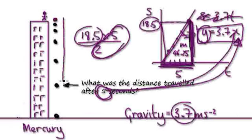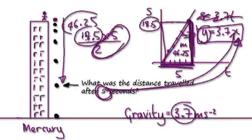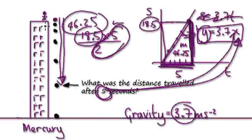So to answer this question, it would have traveled 46.25 meters on Mercury. A cannonball free falling on Mercury — after 5 seconds it would have traveled 46.25 meters. And that's the same as you jumping off this building, because the cannonball and you would fall at the same speed.